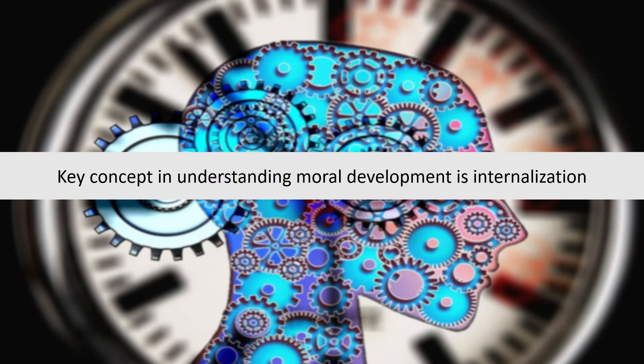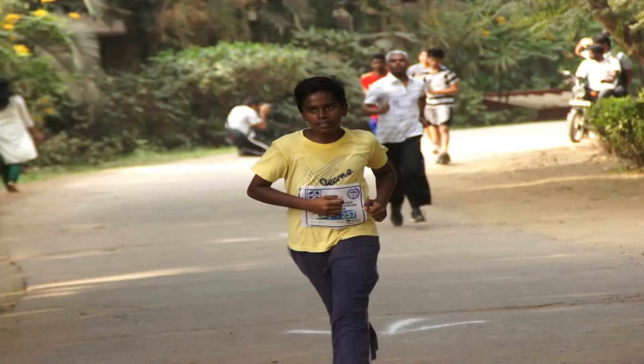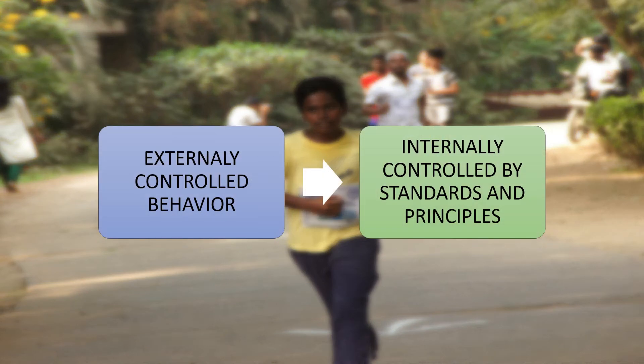The key concept in understanding moral development is internalization — from externally controlled behaviors, the individual moves to internally controlled standards and principles. From childhood, moral development goes in one way, but when they enter into the next stage, that is adolescence, moral development also undergoes changes. We can see the shift towards internally controlled standards and principles.